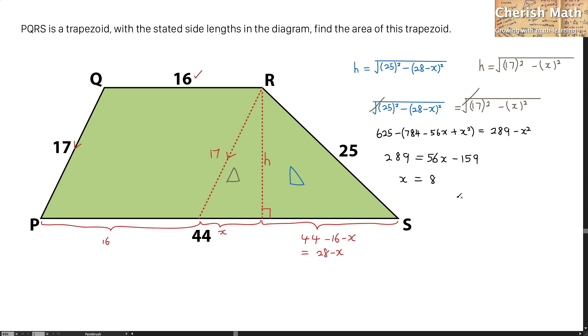By substituting the value of x into this equation, I am going to find what is the value of the height here. That is going to be by using 17 squared minus 8 squared. And this value is going to be 15 for the height.